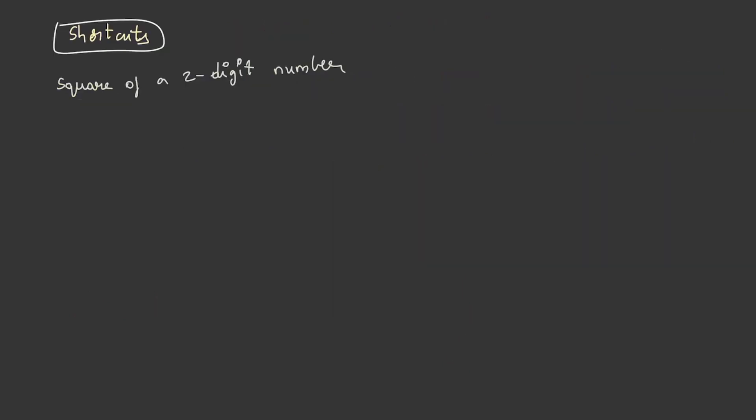In order to find the square of a two-digit number, we need to know a formula, that is (a + b)² = a² + 2ab + b².